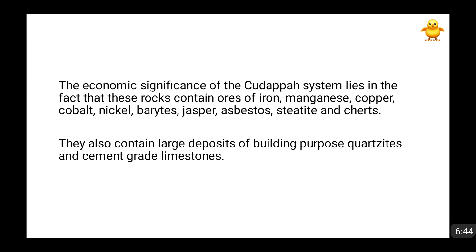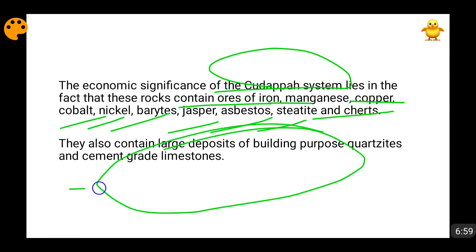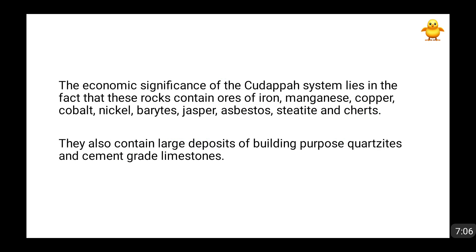Now, what is the economic significance of the Kudappa system rocks? There are ores of iron, manganese, copper, cobalt, nickel, barites, jasper, asbestos, steatite, and cherts. They also contain large deposits of building-purpose quartzites and cement-grade limestones. Because of the presence of these elements, these rocks are very important, but they do not have fossils in them.